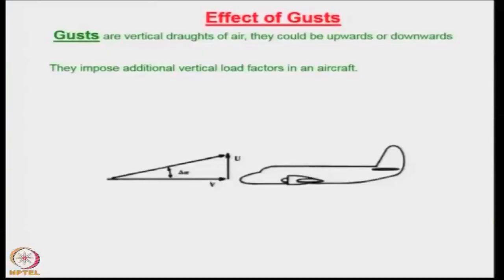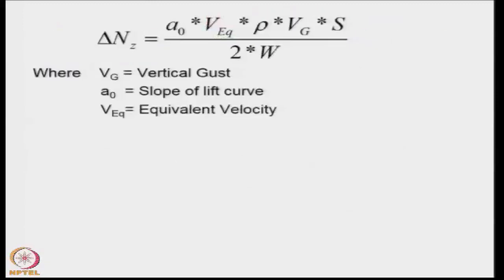If there is an aircraft flying at a velocity V and a vertical gust of U acts on it, then effectively it will create a small increase in the angle of attack delta alpha. Because of that, the relative wind direction is changed by delta alpha.